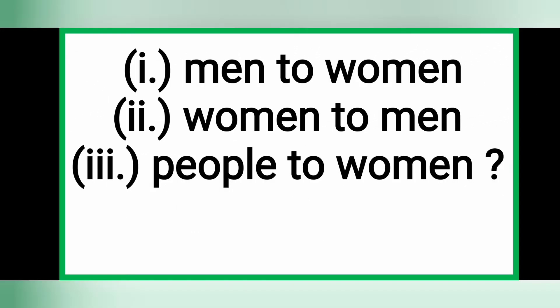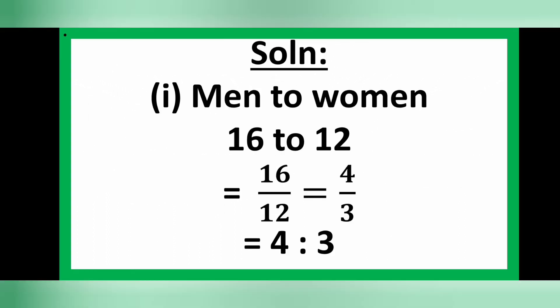Now let's go to Example 2. In a moving train there are 16 men and 12 women. What is the ratio of: (1) men to women, (2) women to men, (3) people to women? For solution number one, to find the ratio of men to women: there are 16 men and 12 women, so the ratio of men to women is 16 to 12, expressed as the fraction 16 over 12.